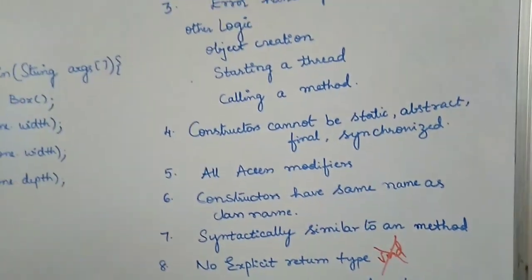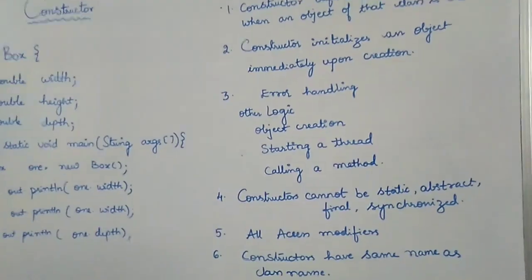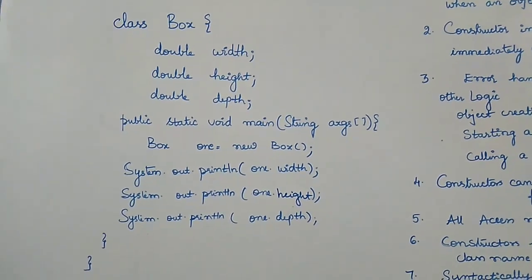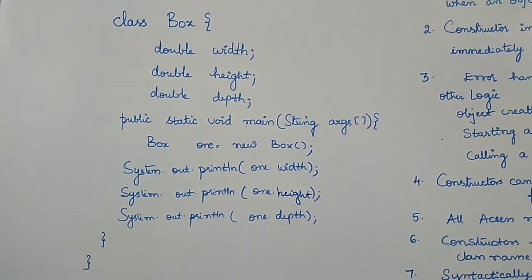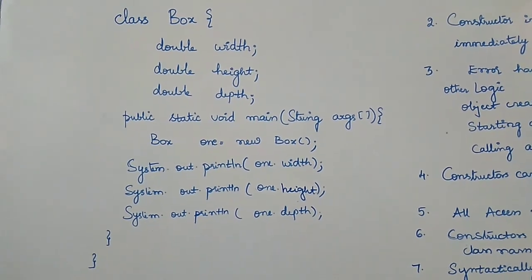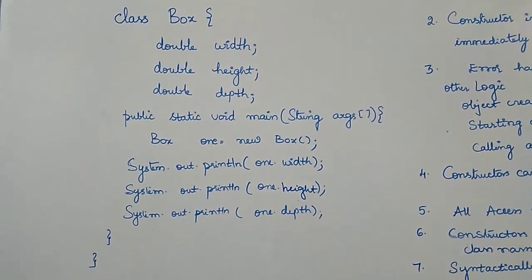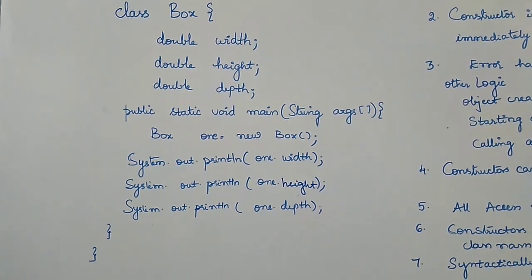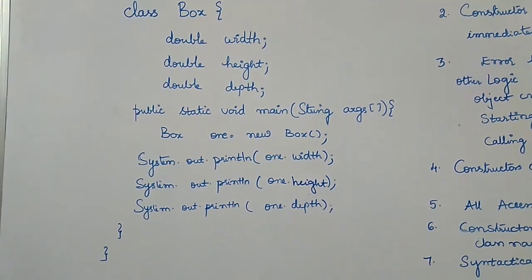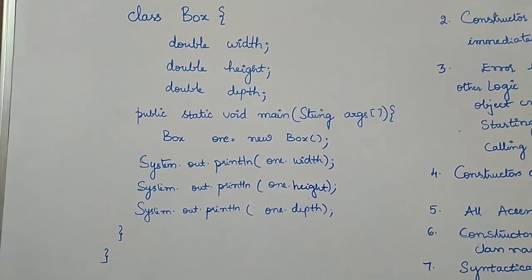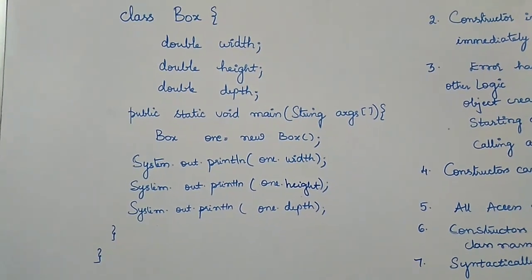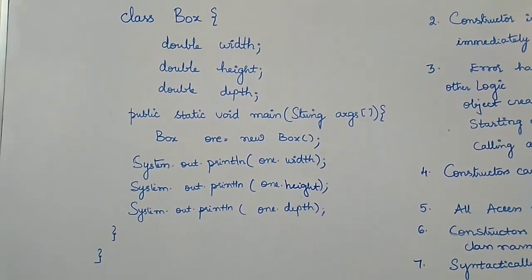Take a look at this program. The class is Box, having three instance variables and a main method as the entry point. Inside the main method I have created one object — the reference variable is named 'one' — and I have tried to print the instance variables. In the entire program I have not initialized the values of width, height, and depth.